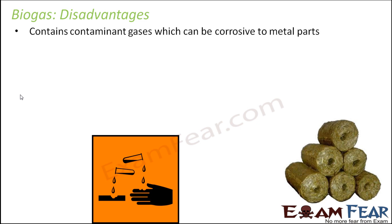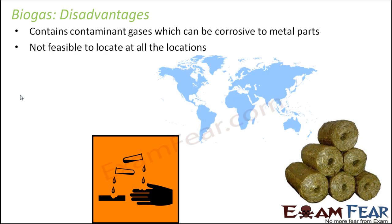Now let us look at some disadvantages. Biogas contains contaminant gases which can be corrosive to metal parts. Since biogas is a mixture of gases including methane, carbon dioxide, and small amounts of others, these gases can corrode metal parts. It is also not feasible to locate a biogas plant at all locations, because a lot of cow dung is required and not all localities have sufficient cattle to provide it.